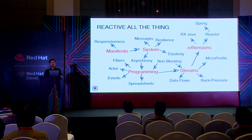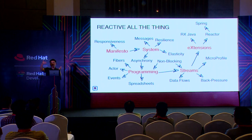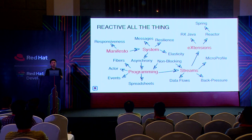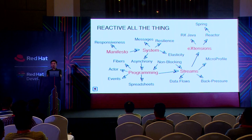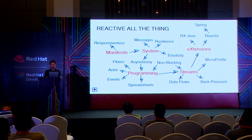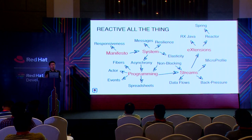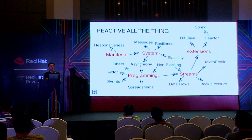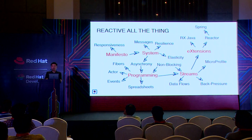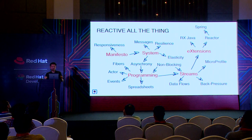In imperative programming, variable A receives the result of B plus C. If B changes and you want A updated, you run that command again. In reactive programming, you say A will receive B plus C, and whenever B or C changes, A is automatically updated. Whenever B or C changes, an event is generated, propagated through a data flow or stream, and you react to the values presented on that stream.